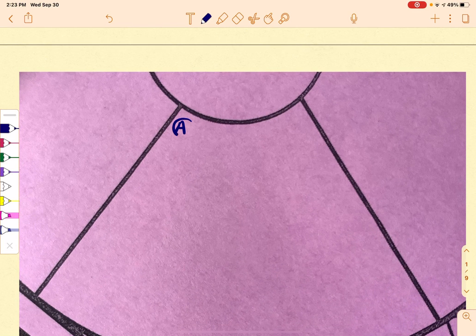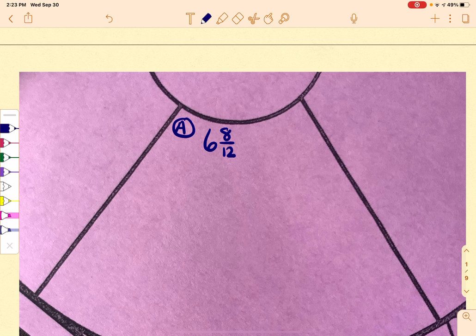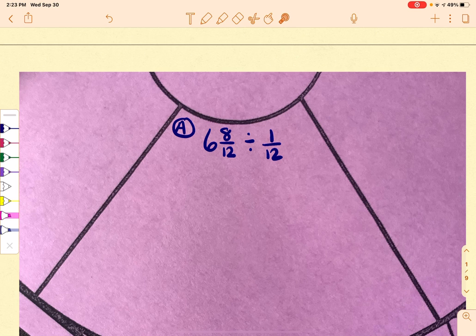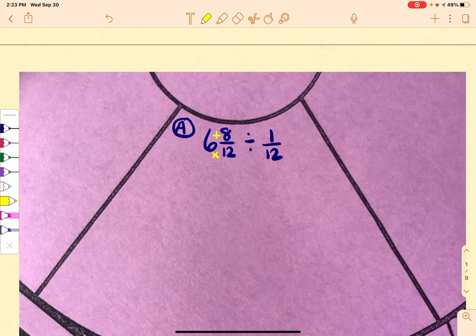So for A, I have 6 and 8 over 12 divided by 1 over 12. Now when we're talking about what part of this fraction is kind of good to go, really only this part is. This first part, we're going to have to take it and change it to an improper fraction. Because the only way I can truly divide anything is if there's 2 fractions.